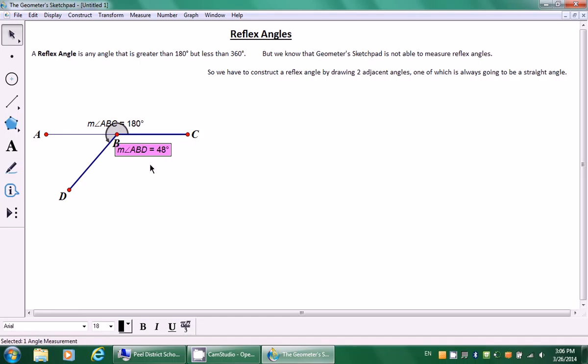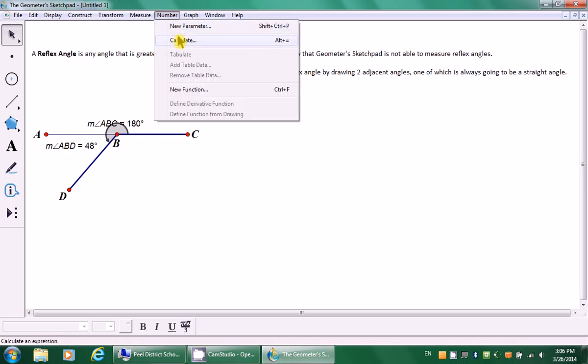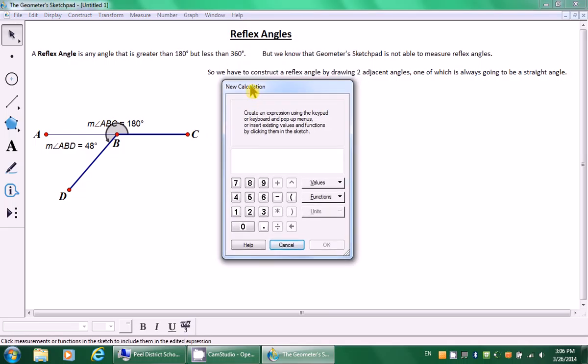So let's measure this last small angle: endpoint, vertex, endpoint. Go to measure angle. Now again, that's not this angle because by inspection you can tell that that is an obtuse angle. So let's move this over here.